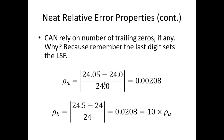But relative error can rely on the number of trailing zeros, if any. Because the last digit sets the least significant figure. For example, when I have 24.0 and three significant figures, my least significant figure is the one-tenth place, and that means my maximum largest value could be 24.05, giving me the 0.00208 we've dealt with. However, if I disregard that last zero and go back to two significant figures, then the largest value I could get would be 24.5. In that case, my relative error is 0.0208, which is ten times different. So disregarding the trailing zero can mess you up.